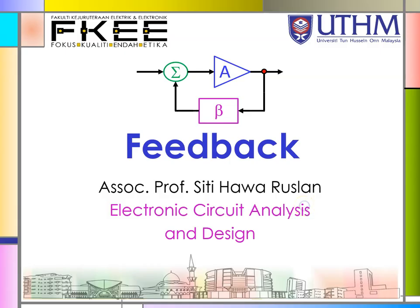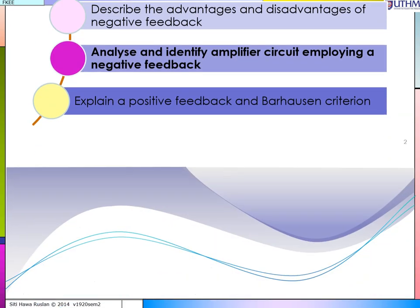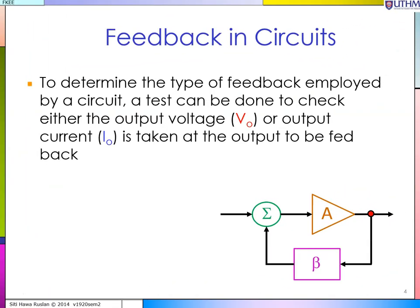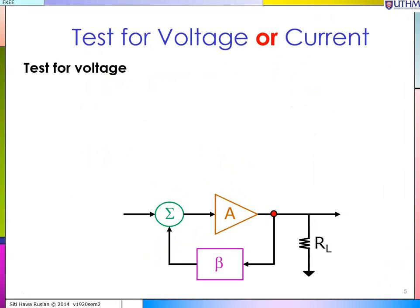We continue with the next topic in negative feedback: how to analyze and identify an amplifier circuit employing negative feedback. We are going to review several circuits and identify the type of amplifier and the type of feedback used. To determine that, suppose you have an amplifier — the output signal taken could be Vout or current, so we call it Xo. You can determine this using either a test for voltage or a test for current.